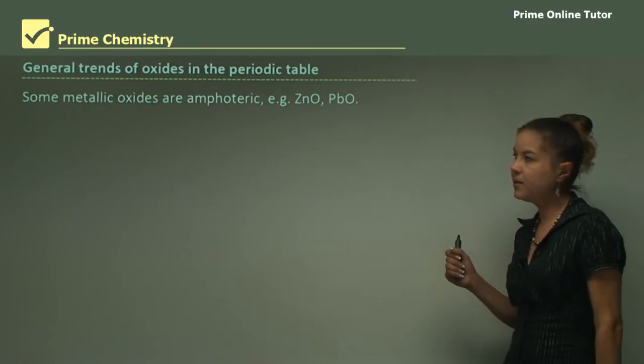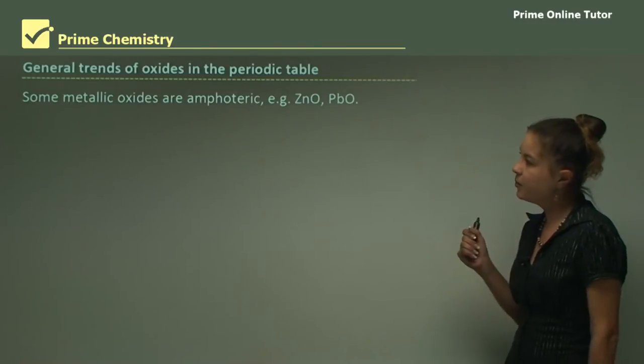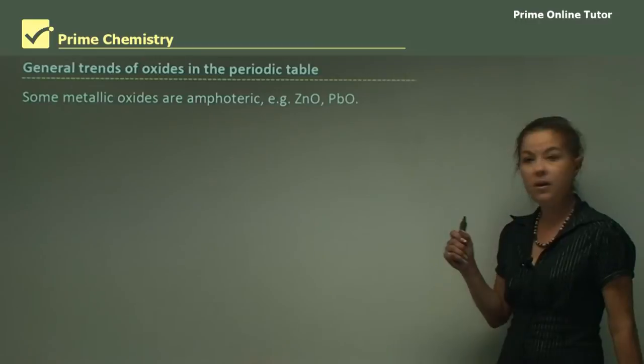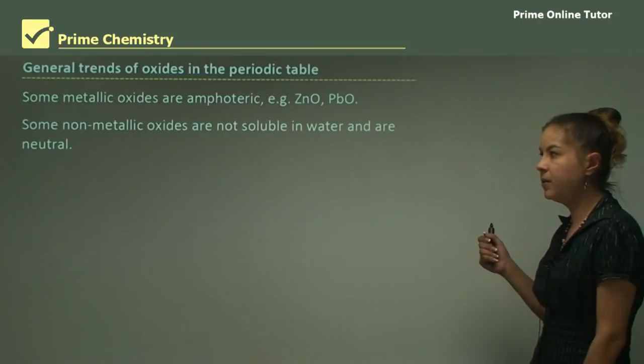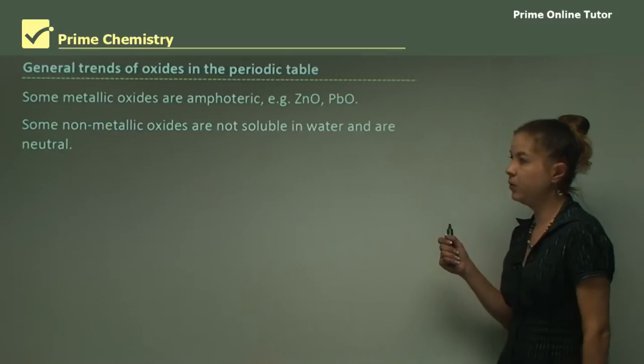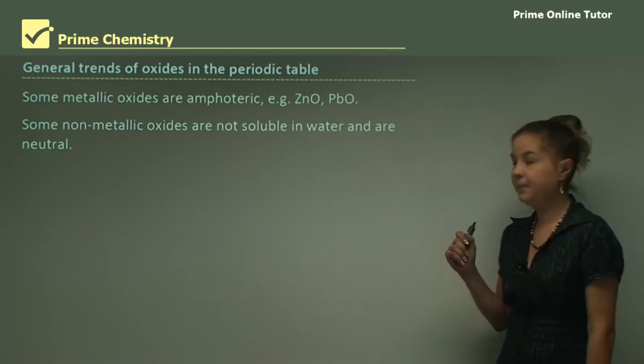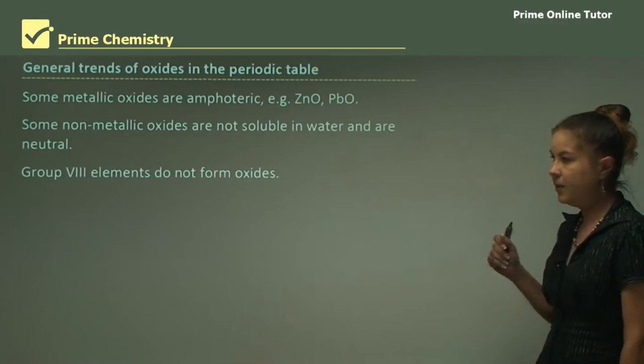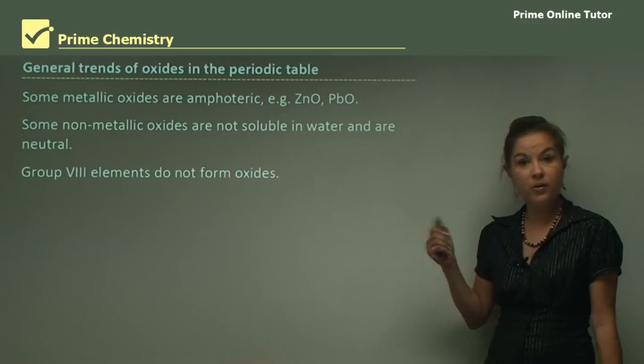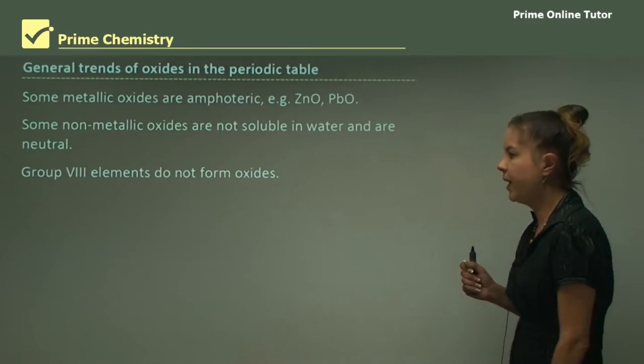Some metallic oxides are amphoteric, for example zinc oxide and lead oxide, and some non-metallic oxides are not soluble in water and some are neutral. So there are a couple of exceptions. Group 8 elements do not form oxides, the noble gases are unreactive.